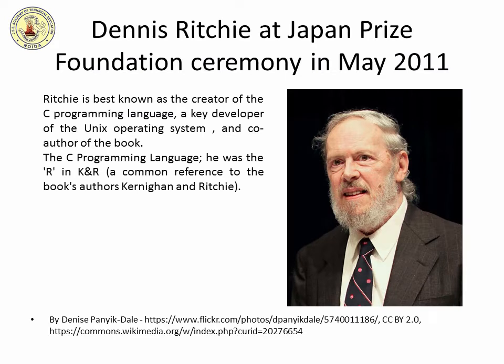C is a general purpose, high-level language that was originally developed by Dennis M. Ritchie to develop the Unix operating system at Bell Labs. C was originally first implemented on the PDP-11 computer in 1972. In 1978, Brian Kernighan and Dennis Ritchie produced the first publicly available description of C, now known as the K&R standard.